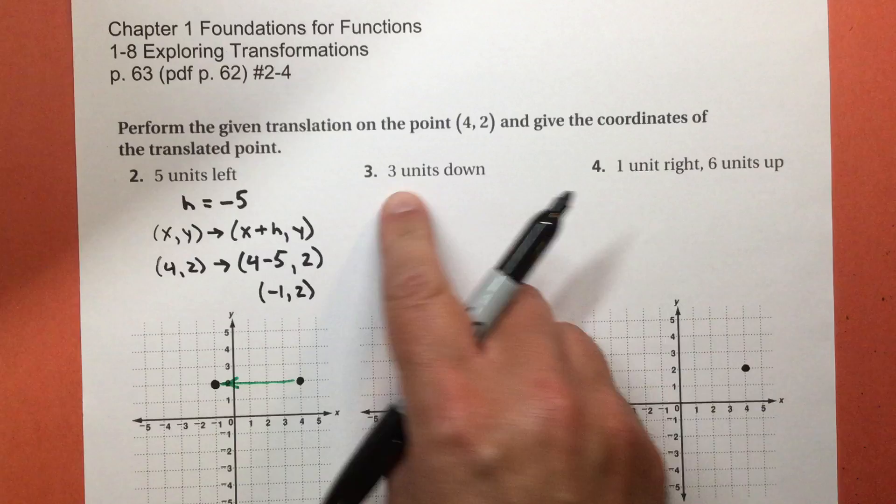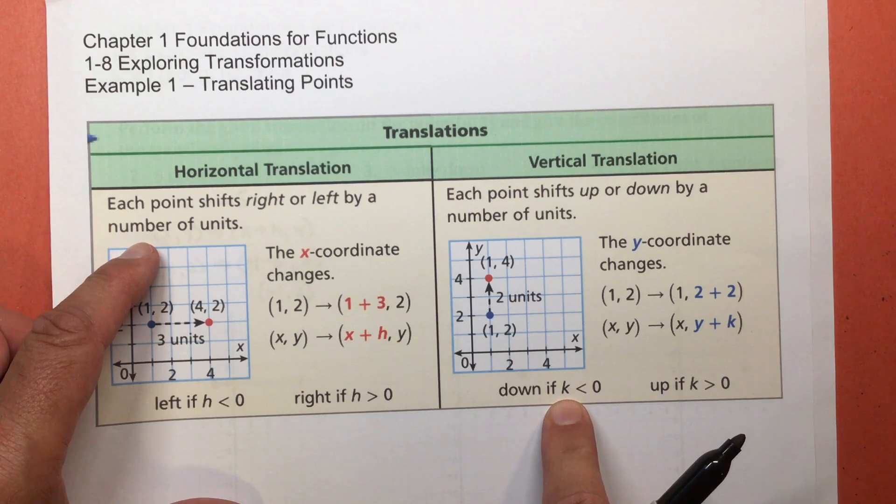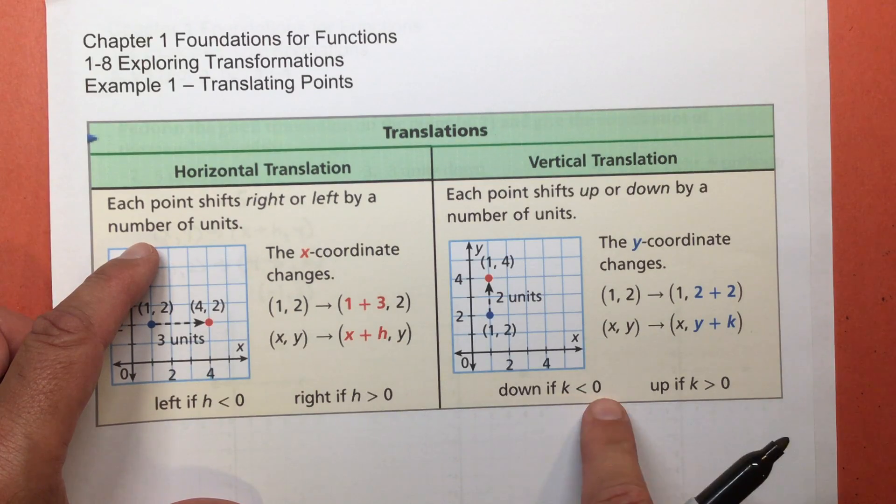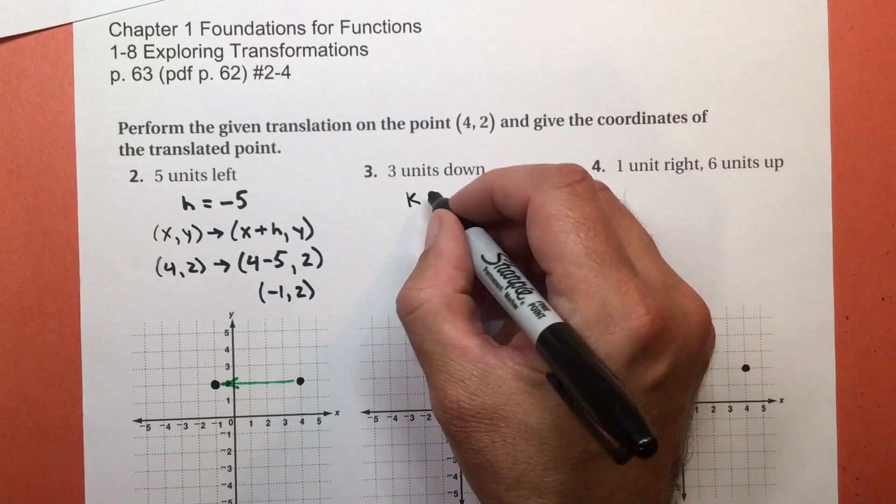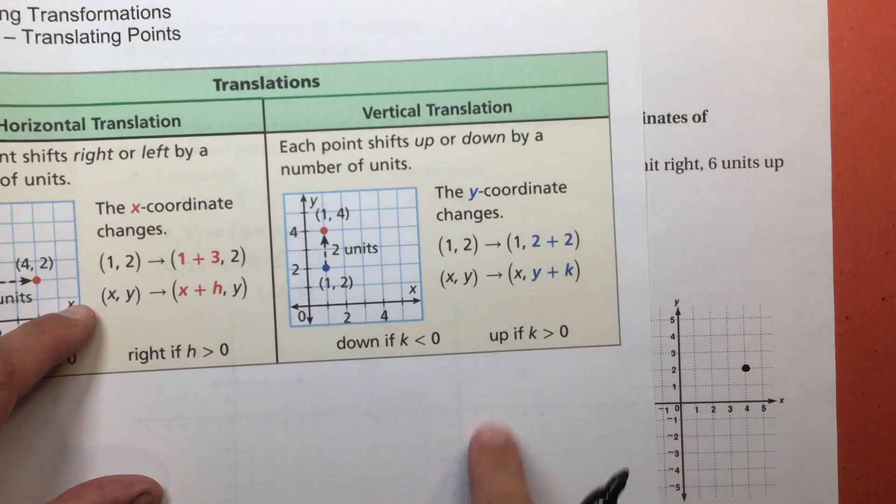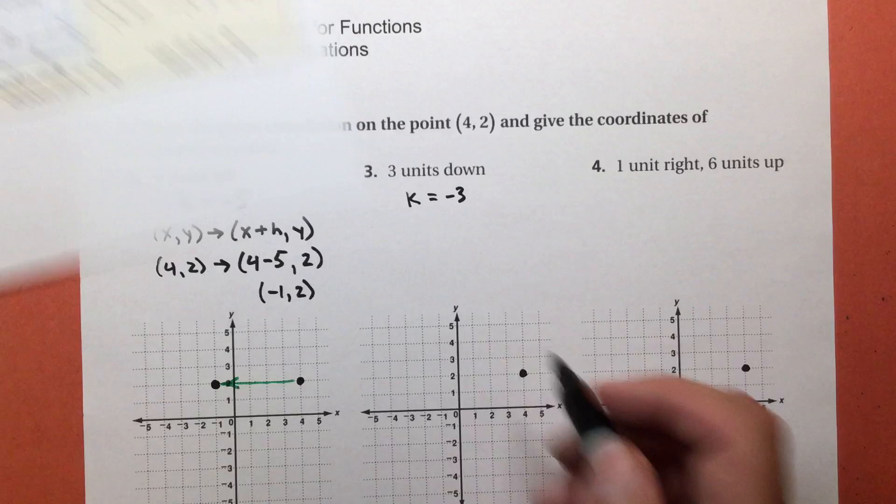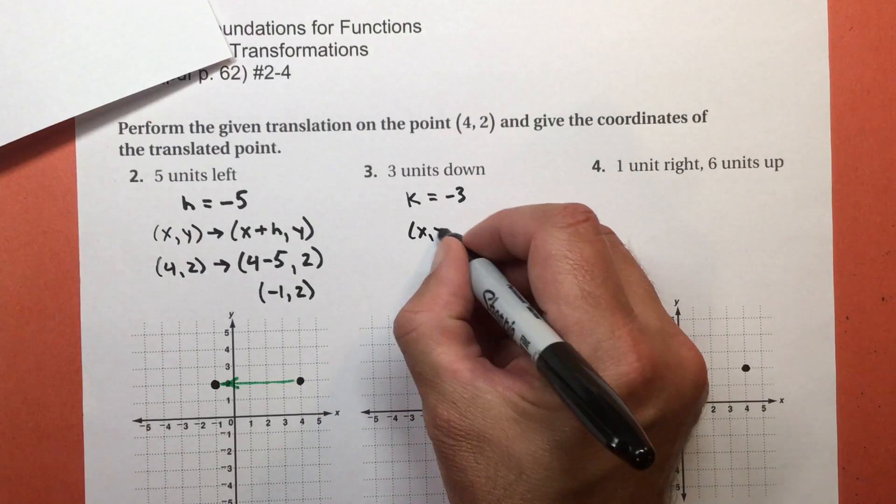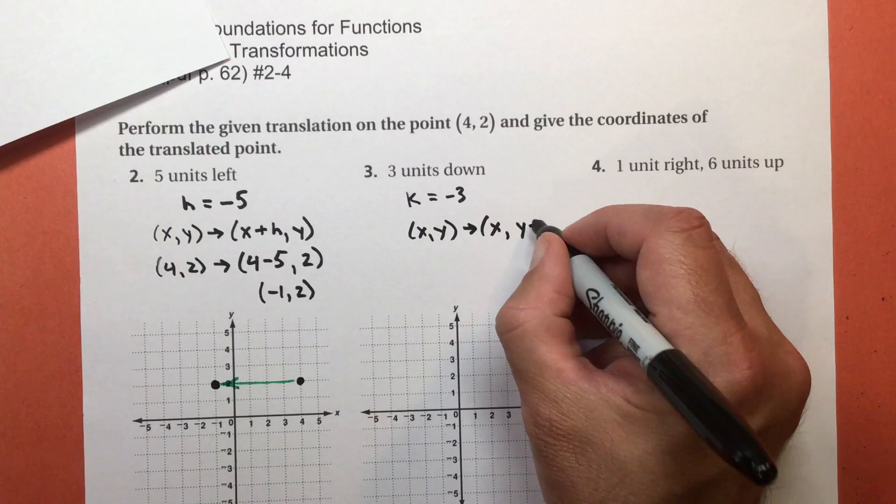Number 3. Now I'm going to do the same point, 4,2, but I'm going to go 3 units down. Down is vertical. And the k is going to be negative. Less than 0 is negative. So my k is going to be negative 3. And my rule, the x stays the same, and I'm going to do Y plus k.